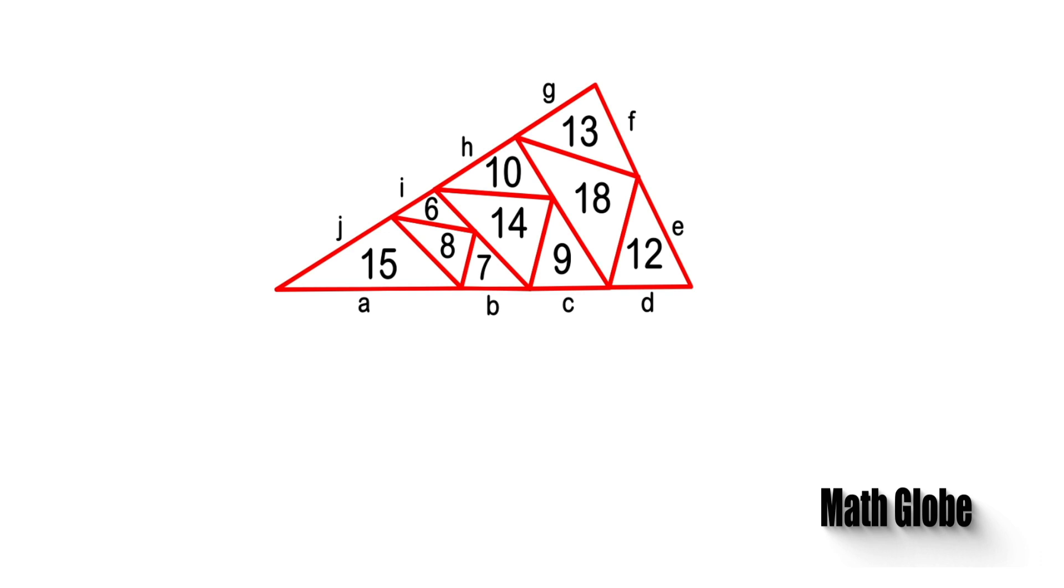Now if we take a closer look at these line segments, we figure out that lengths named by points do not affect the perimeter of the main triangle.